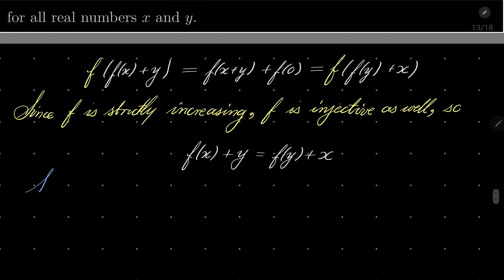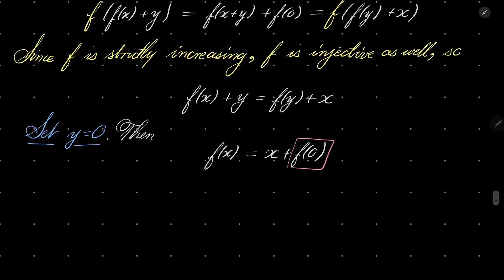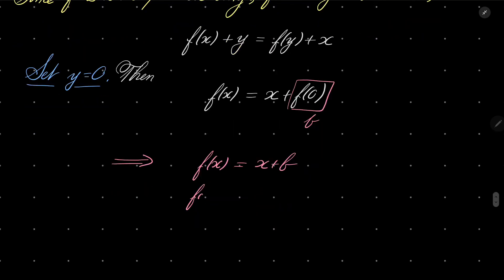And now let's set y to be 0. Then we have the following: f of x equals x plus f of 0. And let's call this number, for example, b. And we see that f of x equals x plus b for some constant b.